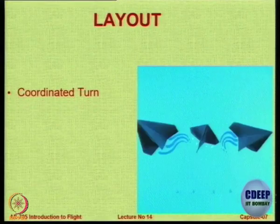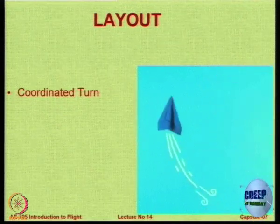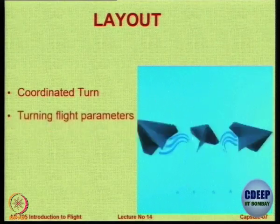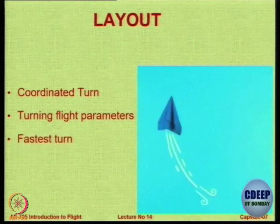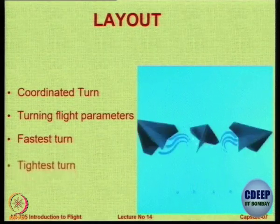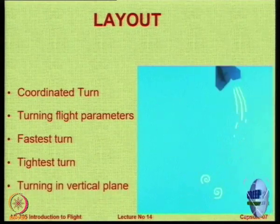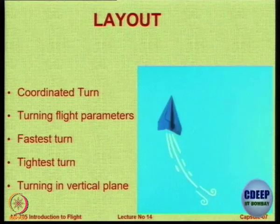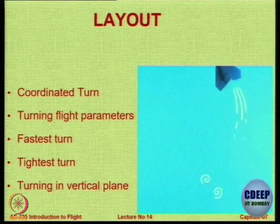So this is today's layout. We are going to look at what is meant by a coordinated turn, and after looking at a coordinated turn we will define it and show what it is. We will look at turning flight parameters, fastest turn, tightest turn, and finally turning in a vertical plane. The previous turns are in the horizontal plane; the last one is in the vertical plane.